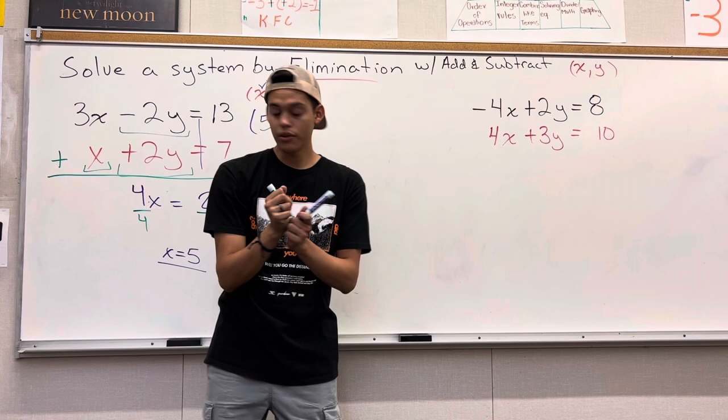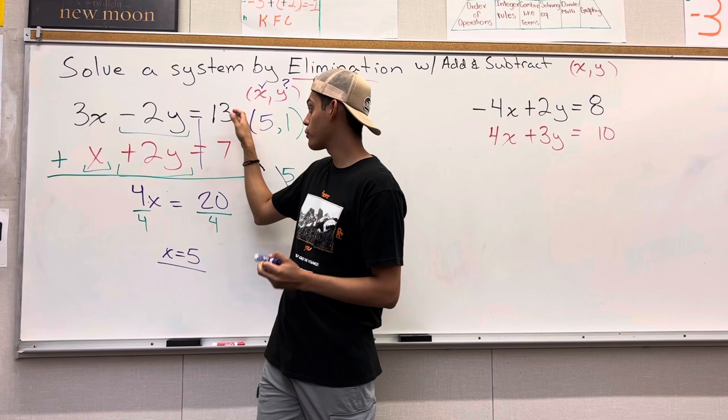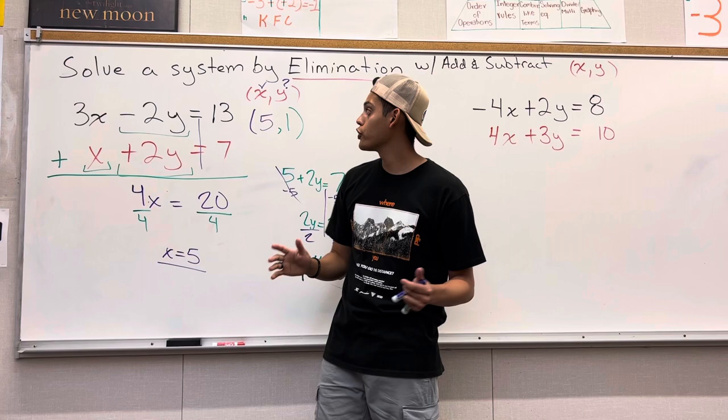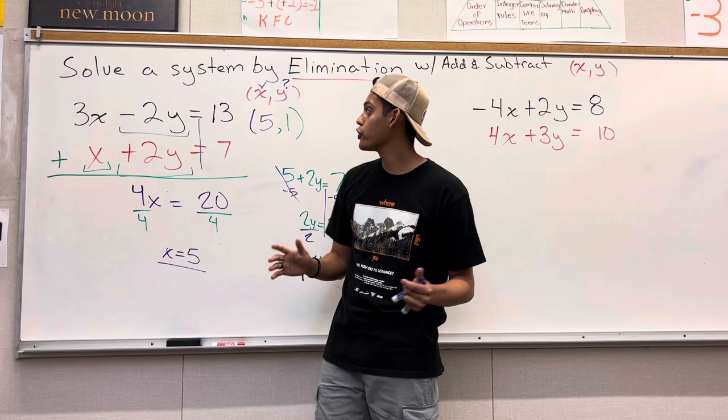So now we have our coordinate 5, 1. That is the point where these two lines intersect. And remember, you can do it to any of the equations up here. You can plug in the 5 to the x right here, or to this x right here with 3. But I just plugged it into this one. It looked a bit easier and gives the answer 5, 1. So that is how you solve a system by elimination with addition. In the next video, I'll teach you guys how to do it with subtraction. Alright, thank you so much for watching.